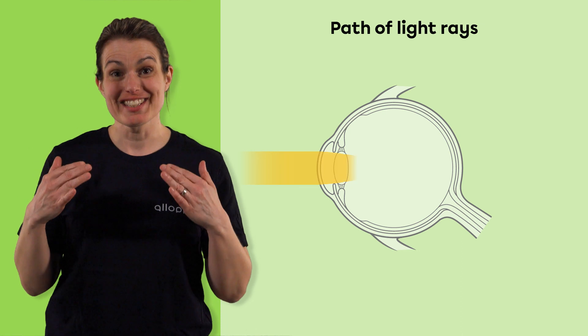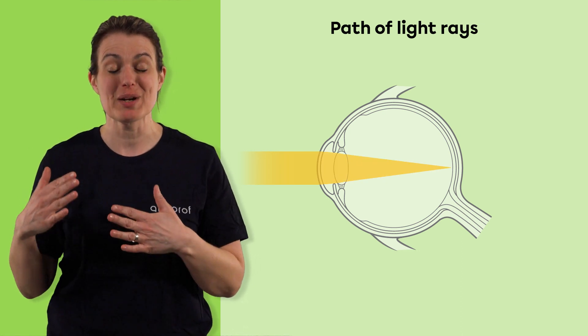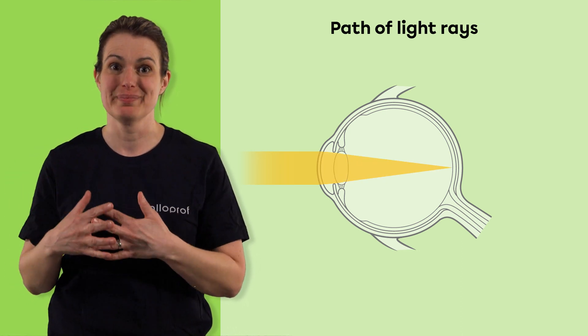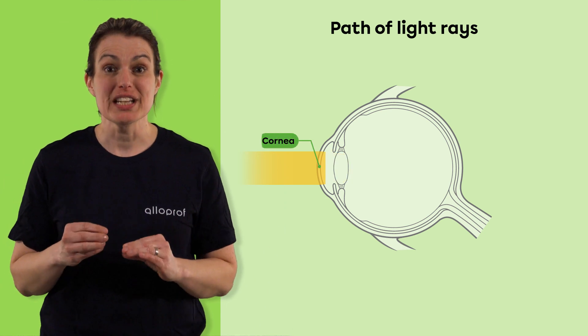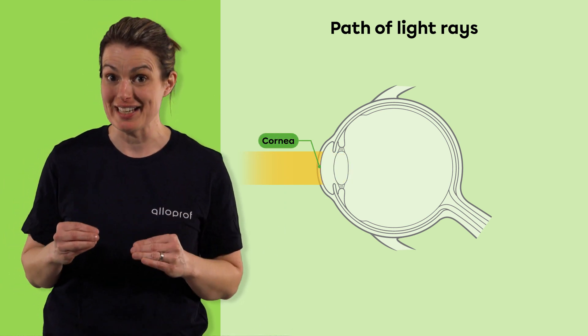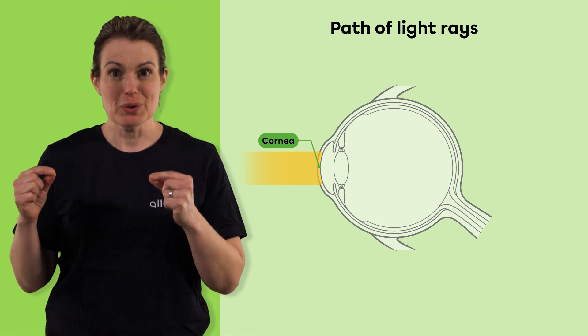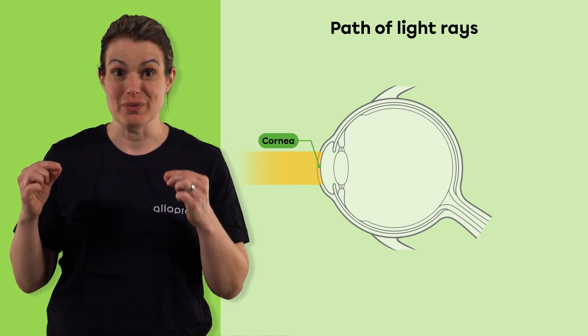When light enters the eye, it passes through several transparent structures and other organs. The cornea is the first transparent membrane penetrated by the light rays. The curved shape of the cornea enables it to converge the light rays.